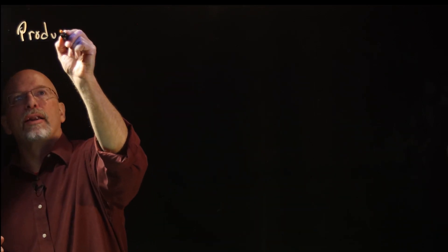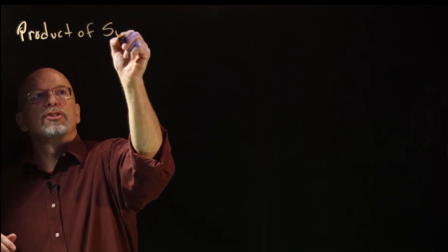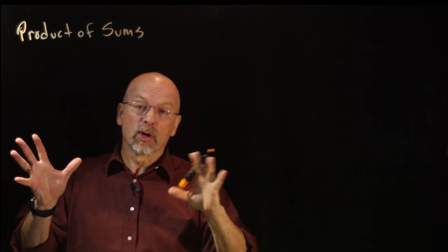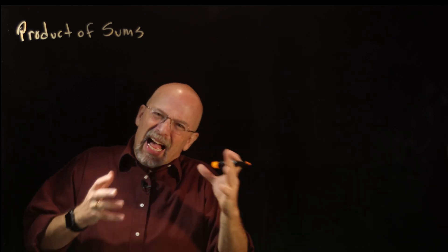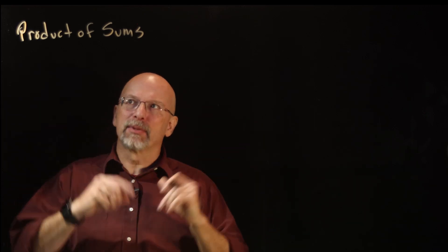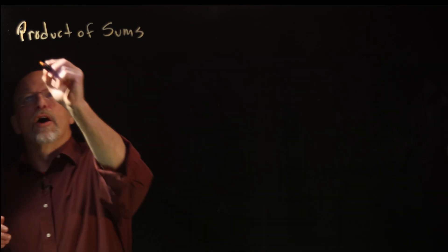We started out this whole journey going to sum of products expressions and product of sums expressions by talking about starting with the truth table and needing to get logic. So why are we going the other way around? Just to show it can be done. We're going to talk about taking a product of sums expression and converting it to a truth table, just to get you used to the concept of how the product of sums works.